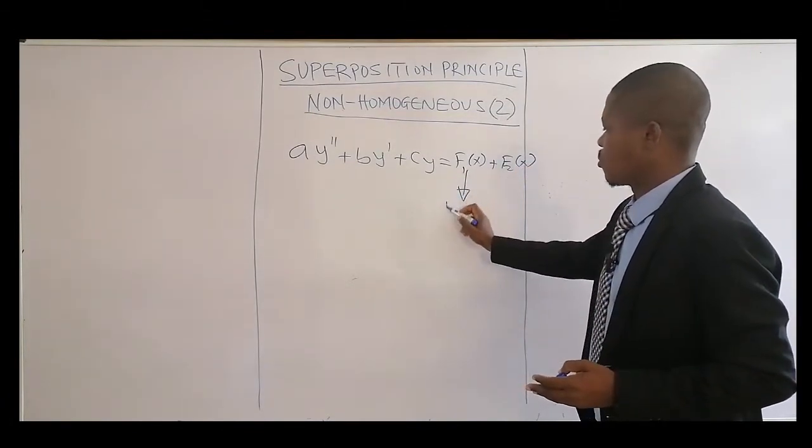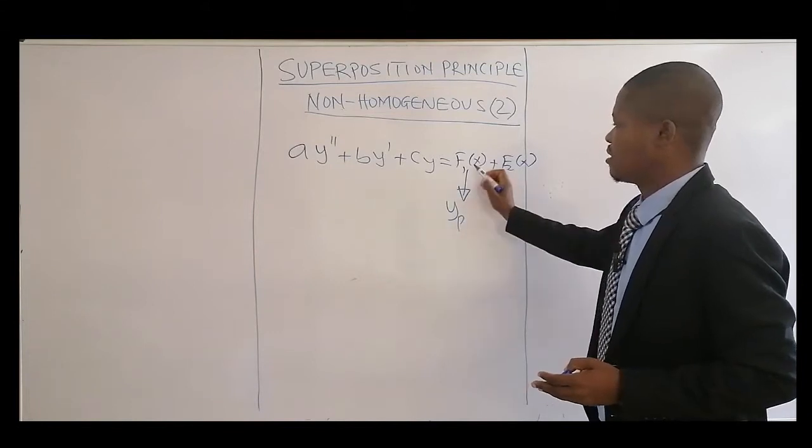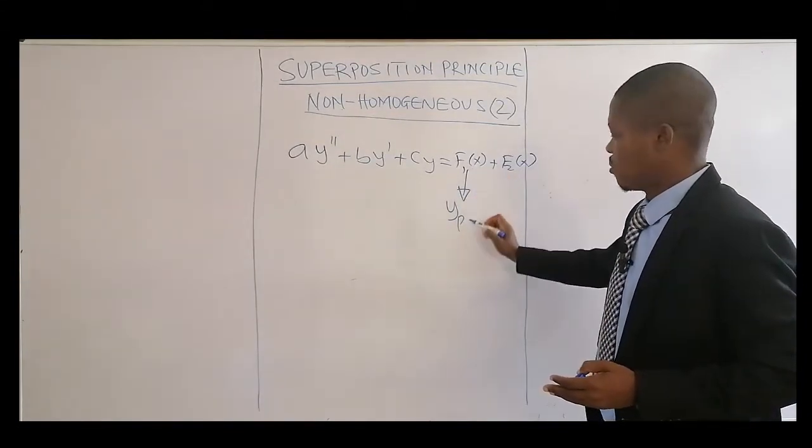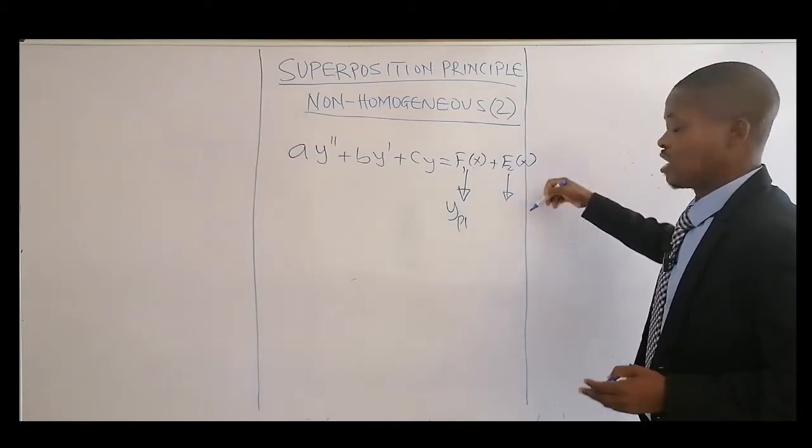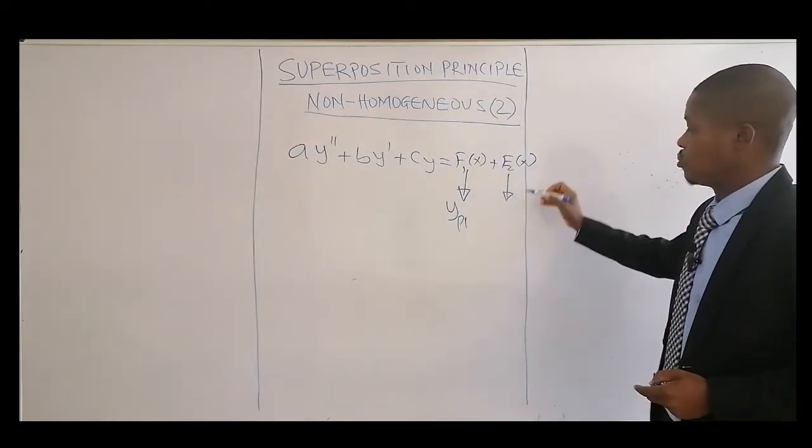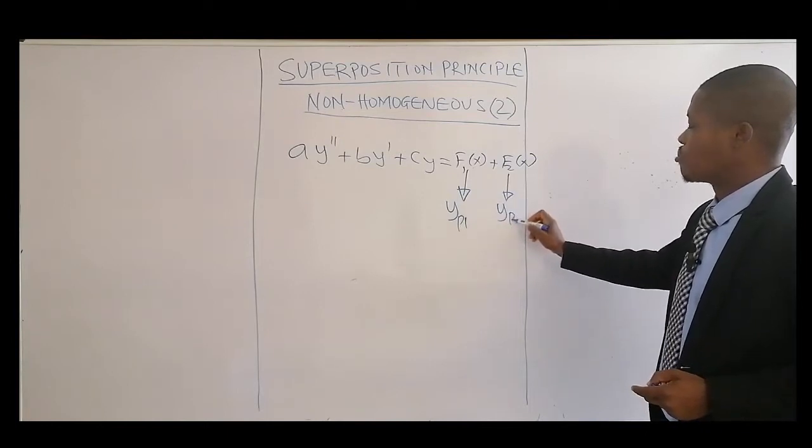You're going to get the particular solution for this f1, which you can call YP1. Then you have to get the particular solution for f2, which we can call YP2.